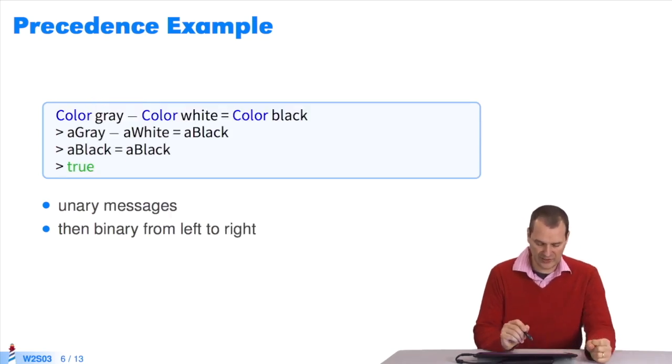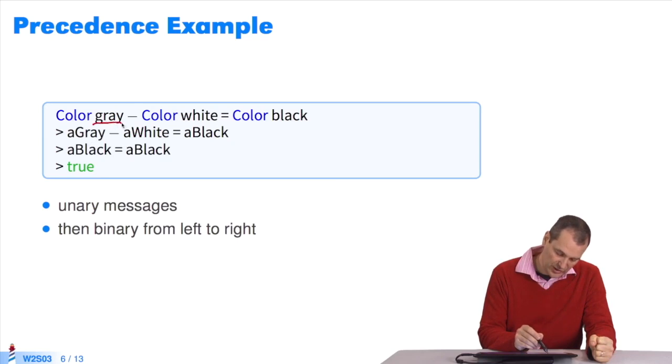This is a more complicated example. Colors in Pharo are objects. I have the class color. I have three unary messages: gray, white, and black. I have two binary messages: equals and minus. What happens then? The system first executes every unary message. It returns the color gray, the color white, and the color black.